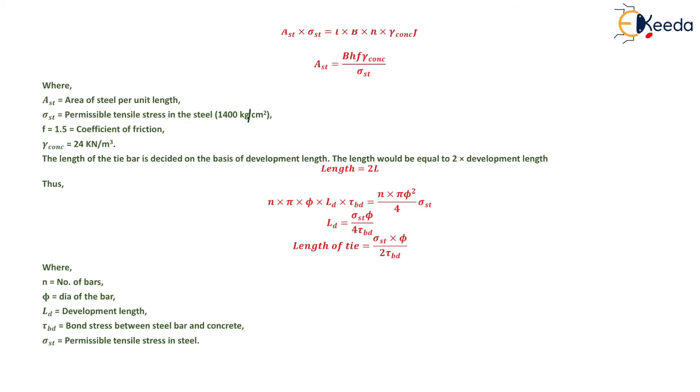So the length of tie bar equals σst·φ/(2τbd), where n is the number of bars, φ is the diameter of bar, Ld is the development length, τbd is the bond stress between steel bar and concrete, and σst is the permissible tensile stress in steel. That is all about the design of joints in cement concrete pavements.